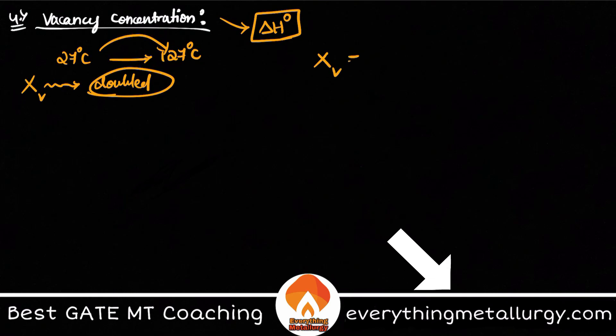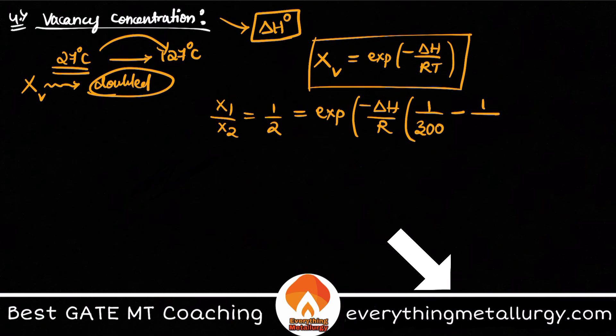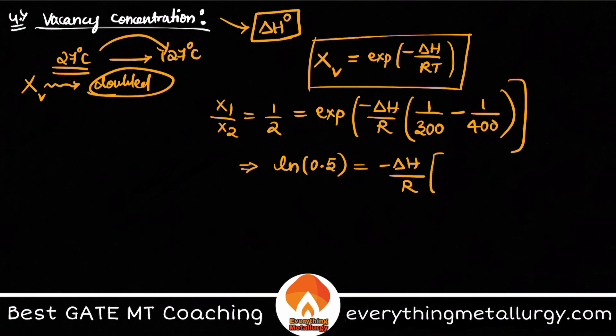Let's say equilibrium concentration Xᵥ = exp(-ΔH/RT). This is the formula, direct formula. So what you do? X₁/X₂ = 1/2 because they said it got doubled, equals exp(-ΔH/R) - let me take it as common. Now what I get here is 1/T₁ - 1/T₂. So this is 27, so this is 1/300 - 1/400. So here you have on bringing this side: ln(0.5) = -ΔH/R × (1/300 - 1/400). Again an easy question. Only thing is you need to know the formula here.